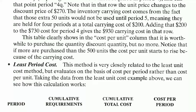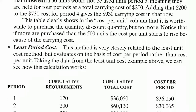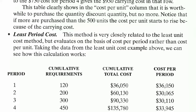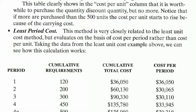Adding that $200 to the $730 cost for period 4 gives the $930 carrying cost in that row. This table clearly shows in the cost per unit column that it is worthwhile to purchase the quantity discount quantity, but no more. Notice that if more than 500 units are purchased, the cost per unit starts to rise because of the carrying cost.